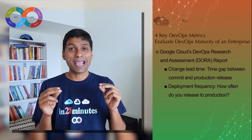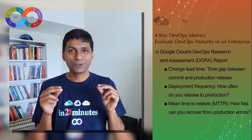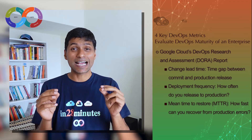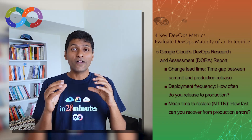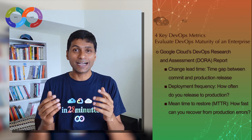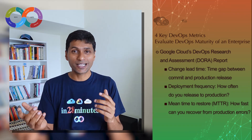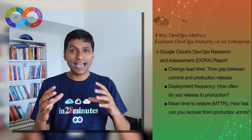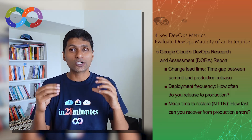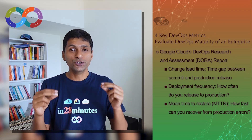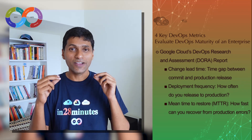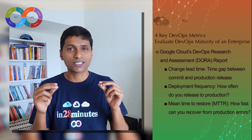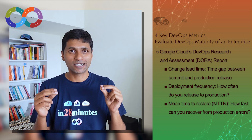The third metric, which is very important, is MTTR — mean time to recover. One of the most important things we focus on in DevOps is observability. Whenever there's a problem, you want to have enough data — logs, tracing, metrics — that can help you debug the problem fast. Mean time to recovery focuses on that: how much time do you need to fix a critical bug in production? How fast can you recover from production errors?